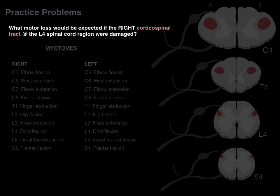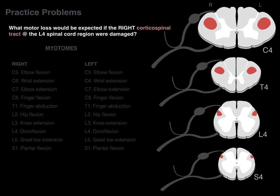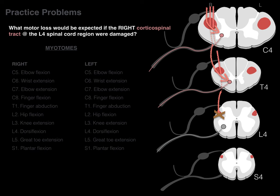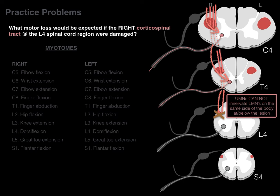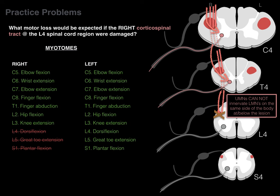Practice problem: What motor loss would be expected if the right corticospinal tract at the L4 spinal cord region were damaged? The X represents the lesion, so a descending neuron would be blocked and everything below would be affected. Upper motor neurons coming down to cervical and thoracic regions have no problem, but at the L4 level the signal can't get through. Lower motor neurons at and below L4 — including the sacral region — are not innervated. Upper motor neurons cannot innervate lower motor neurons on the same side of the body at or below the lesion.